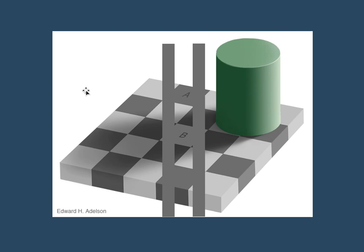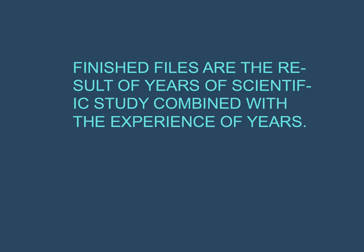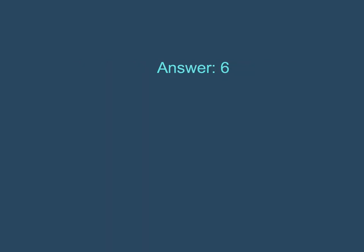Another example of the brain's ability to manipulate information: we also don't see things that are there, things right in front of us. I want you to look at this sentence, read it, and then count how many F's are in it. Stop the video, look at the sentence, count the F's, and then come back. Hopefully the answer you got was six — there are six F's in that statement.